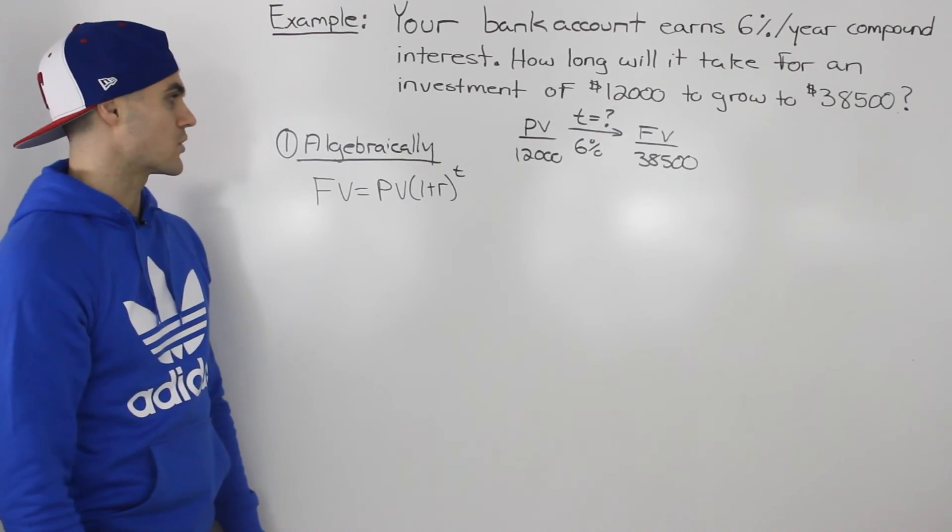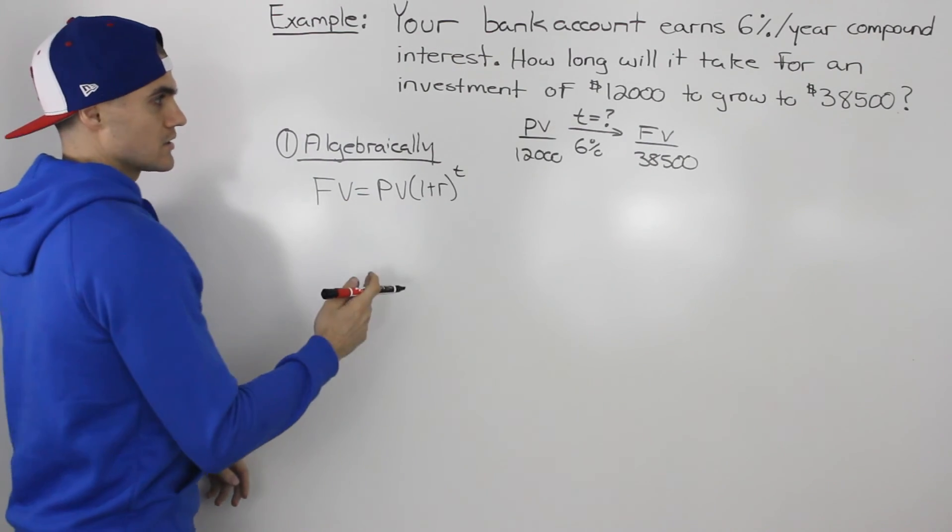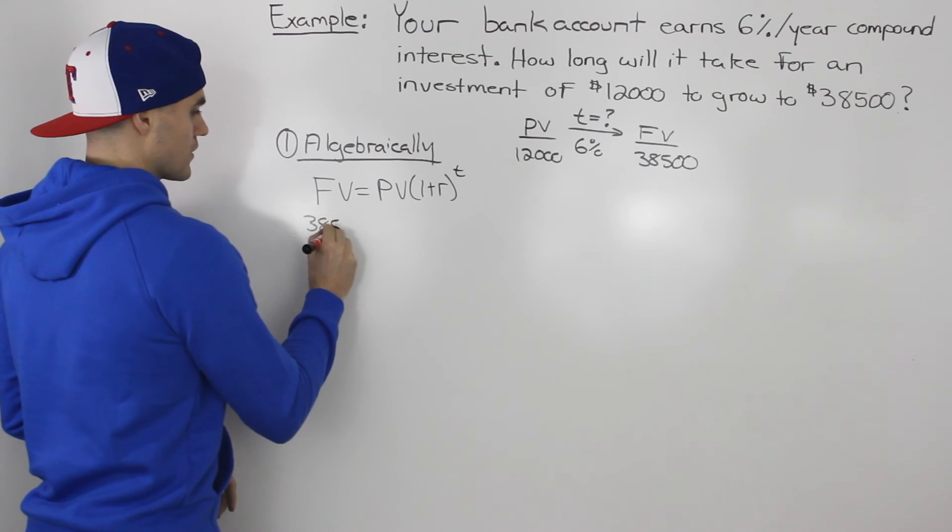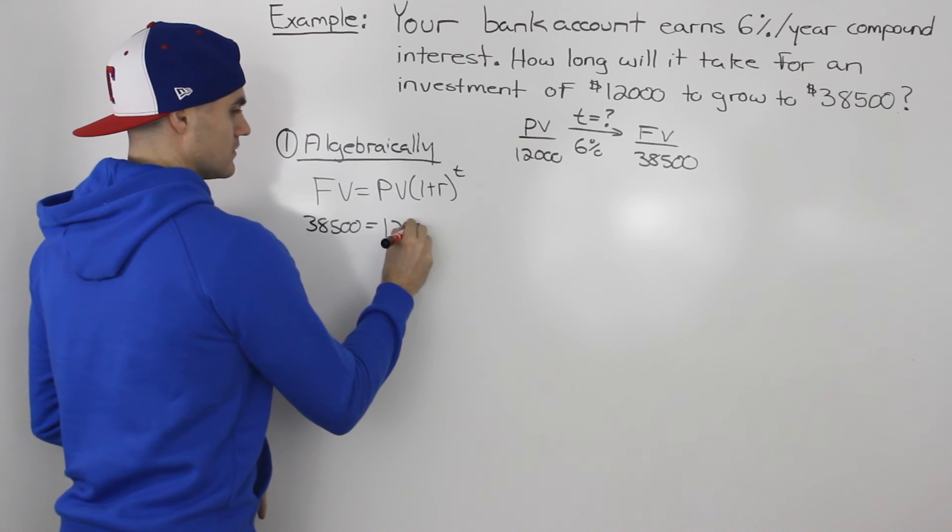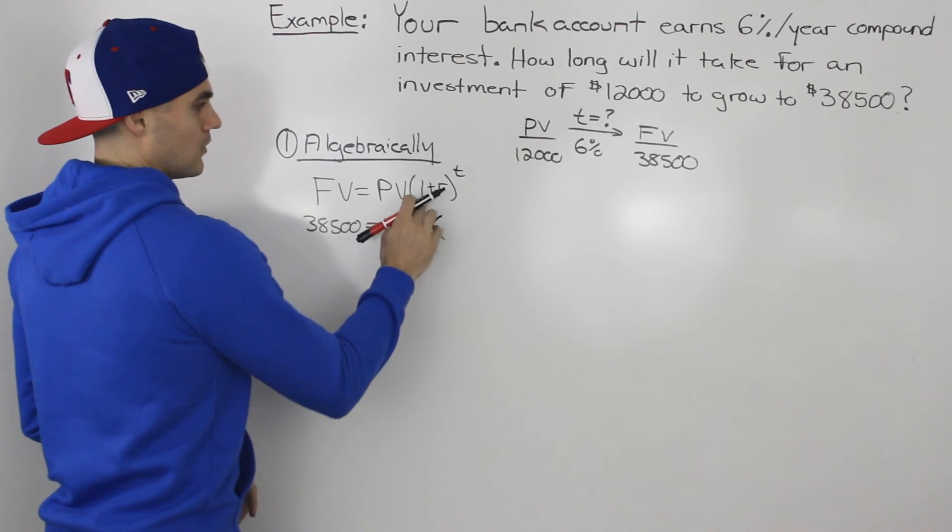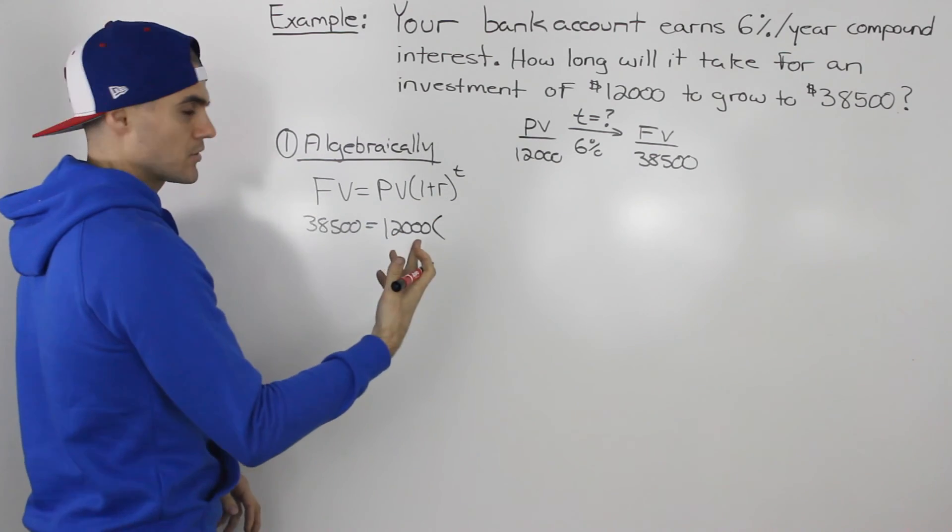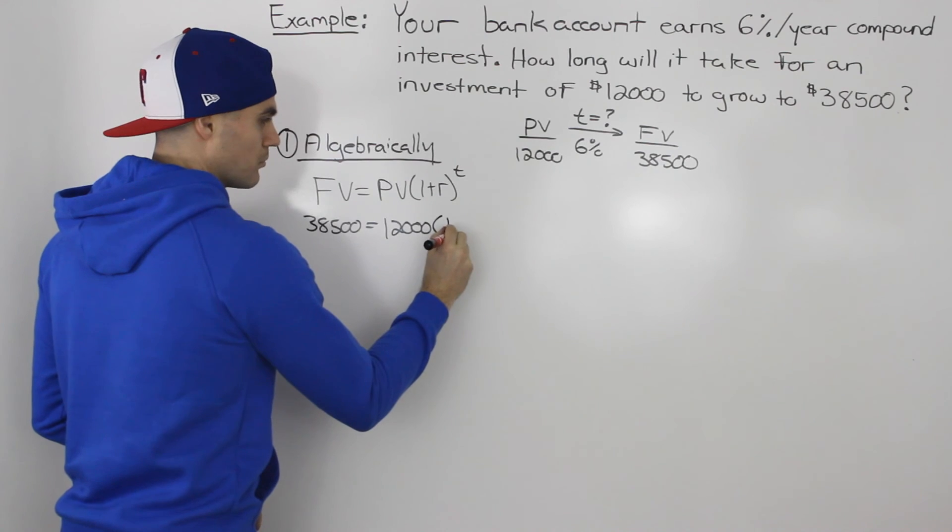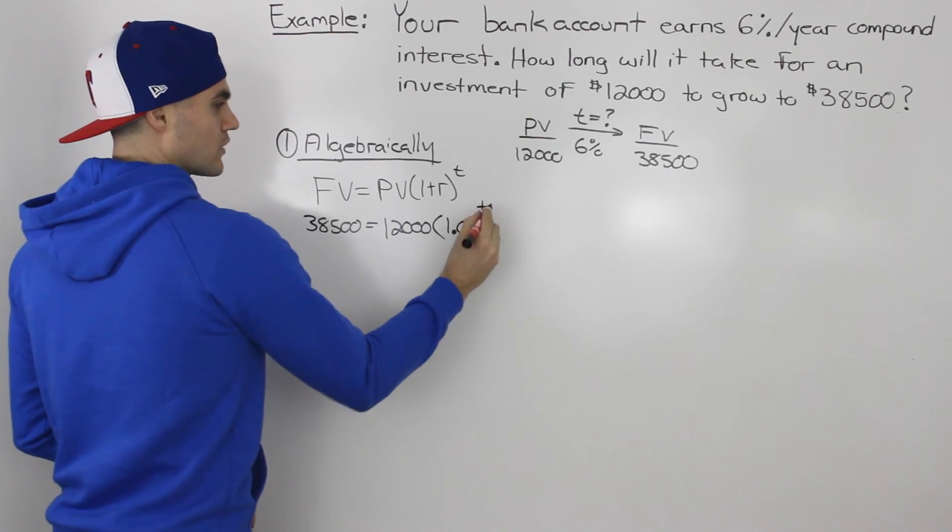So the first way, let's solve it algebraically using the compound interest formula. Let's plug everything in. Our future value is $38,500. Our present value is $12,000. And then 1 plus r, our r is 6%, and the r has to be in decimals. So that would be 1 plus 0.06, so let's just write 1.06 right away here. And we're solving for t.